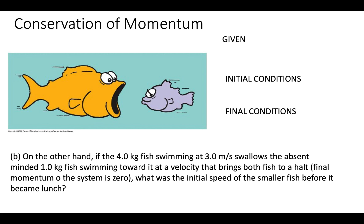In this example, we consider another collision problem between two objects. In this particular case, we have a four-kilogram fish — the big fish — swimming at three meters per second to the right. It swallows an absent-minded one-kilogram fish swimming towards it, and the collision brings both fish to a halt, so their final momentum is zero. We want to determine the initial speed of the smaller fish before it became lunch.